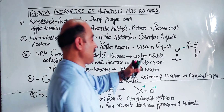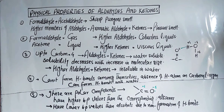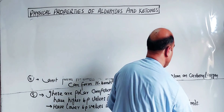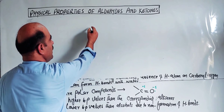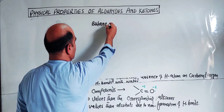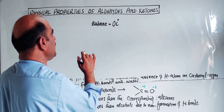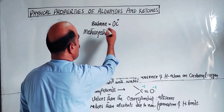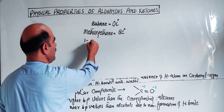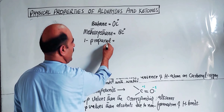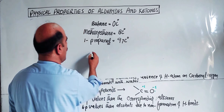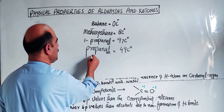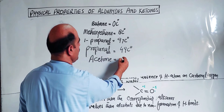To illustrate with examples and boiling point values: formaldehyde has a boiling point of 0°C; methoxy ethane (an ether) has a boiling point of 8°C; 1-propanol (an alcohol) has a boiling point of 97°C; propanal (an aldehyde) has a boiling point of 49°C; and acetone (a ketone) has a boiling point of 56°C.